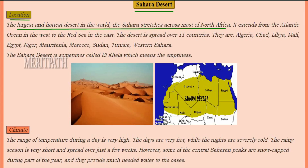It extends from the Atlantic Ocean in the west to the Red Sea in the east. This desert spreads over 11 countries: Algeria, Chad, Libya, Mali, Egypt, Niger, Mauritania, Morocco, Sudan, Tunisia, and Western Sahara.